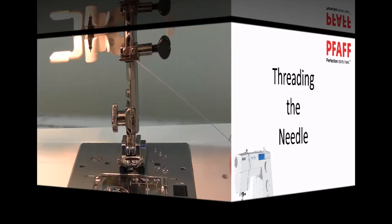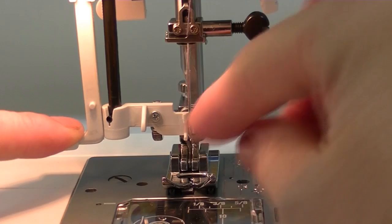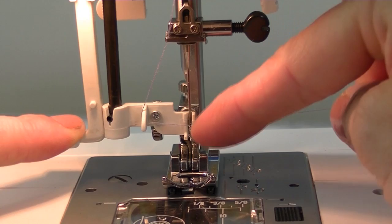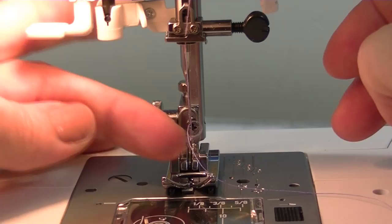To thread the needle, we're going to use the needle threader. That's located on the left-hand side of our needle bar. Place the thread underneath the hook, then in underneath the hooks that go beside the needle. Release your needle threader, release the thread, and it will form a loop at the back of your needle. This requires a little bit of practice, but it's definitely worthwhile.